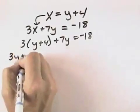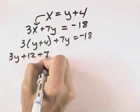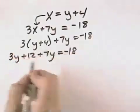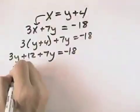We first multiply out using the distributive property. Then we can combine like terms, because 3y and 7y is 10y.